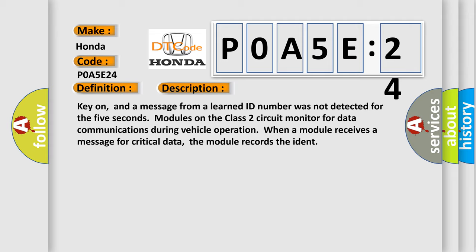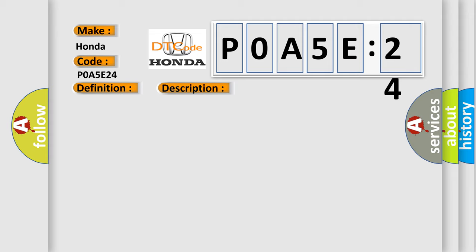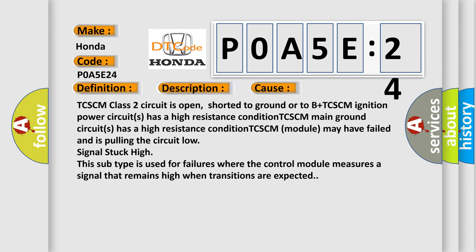This diagnostic error occurs most often in these cases: TCSCM class two circuit is open, shorted to ground or to B+. TCSCM ignition power circuit has a high resistance condition. TCSCM main ground circuit has a high resistance condition. TCSCM module may have failed and is pulling the circuit low signal stuck high. This subtype is used for failures where the control module measures a signal that remains high when transitions are expected.